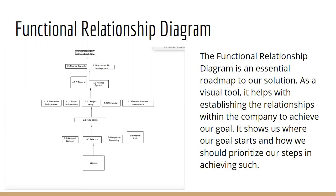Now let's discuss the functional relationship diagram that we made. We started with our concept and acknowledged that if we are to begin, we must have telecommunications, accrual booking, corporate accounting, and an internal audit. In order to have those, we must have fixed assets — these would be accountants, telephones, etc. In order to have these assets, we must have fixed asset maintenance, project maintenance, project setup, IT financials, and a financial structure maintenance. In order to have those, we must have IT finance and a proper finance system. Once we have these, we can achieve finance rewards and restaurant P&L management. This all leads to our goal of achieving compensation and increased cash flow while gaining more fluent throughput.